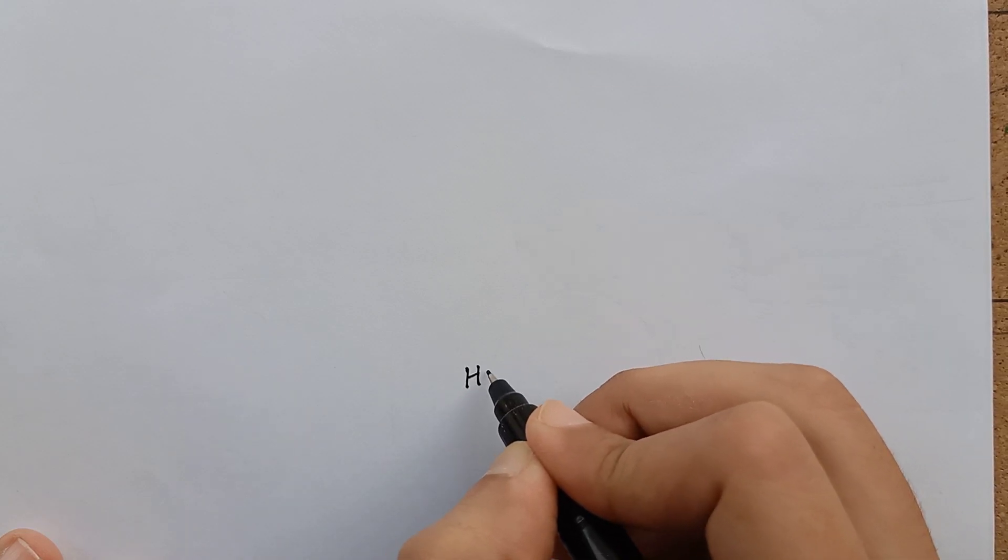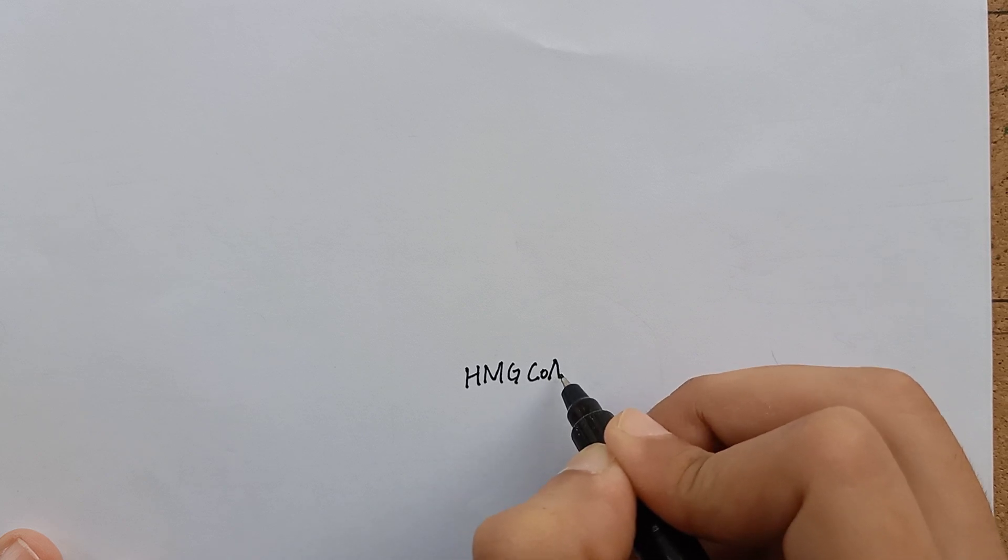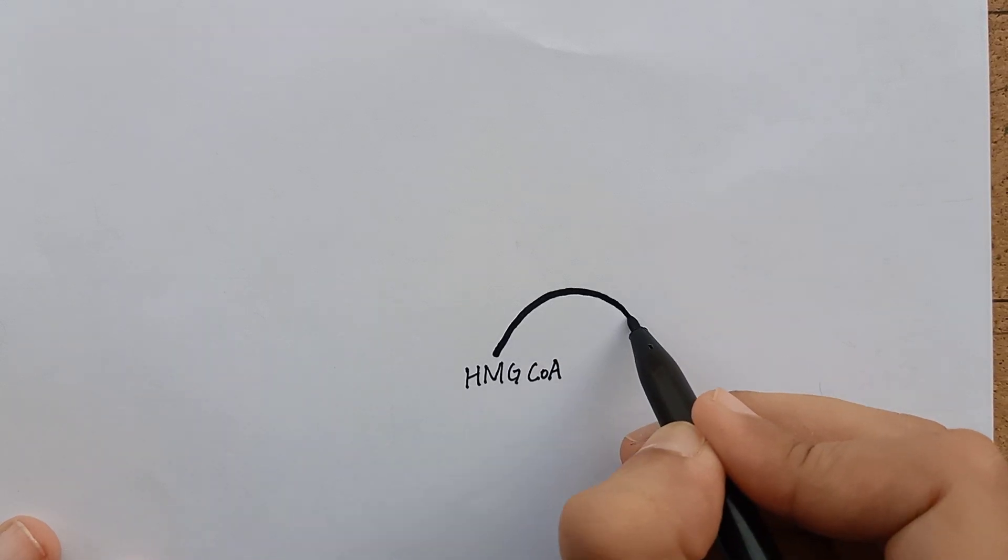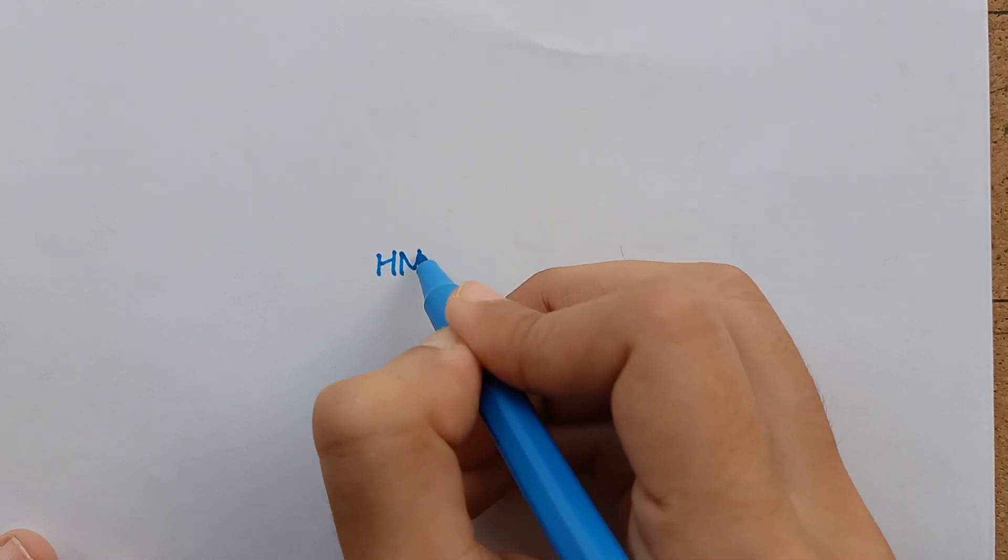Now we will learn the regulation of cholesterol synthesis in this video. There was a step in cholesterol synthesis where a 6-carbon compound HMG-CoA was produced. HMG-CoA was reduced to mevalonate by the enzyme HMG-CoA reductase.